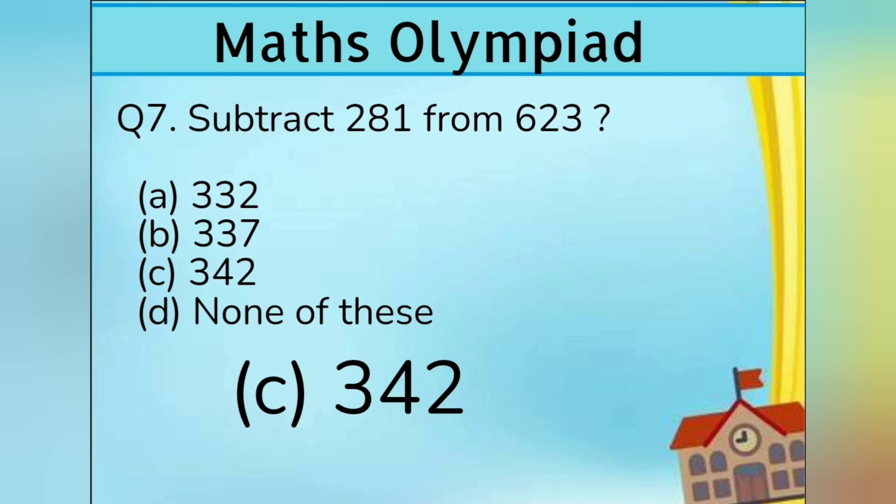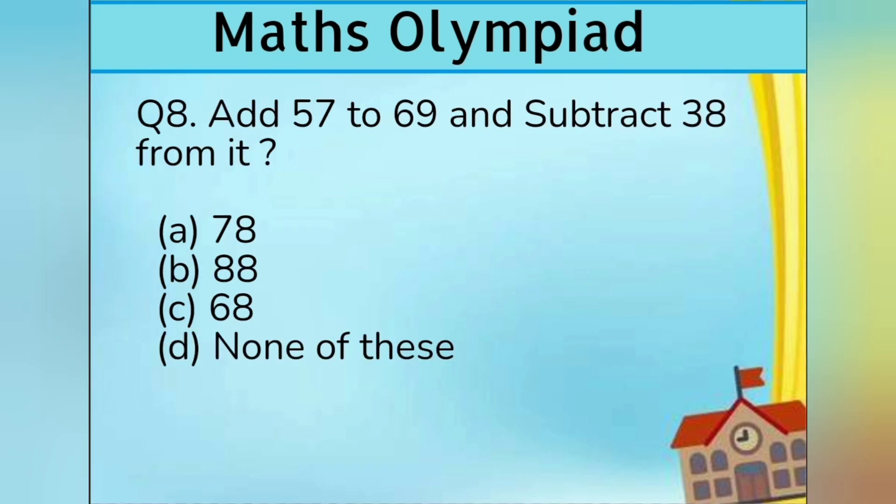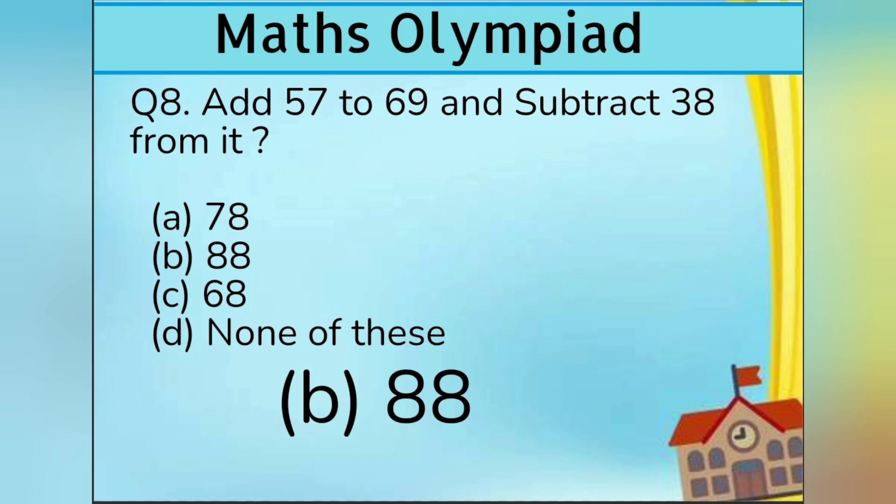Question number 8. Add 57 to 69 and subtract 38 from it. Option A 78, Option B 88, Option C 68, Option D none of these. Answer is Option B 88.